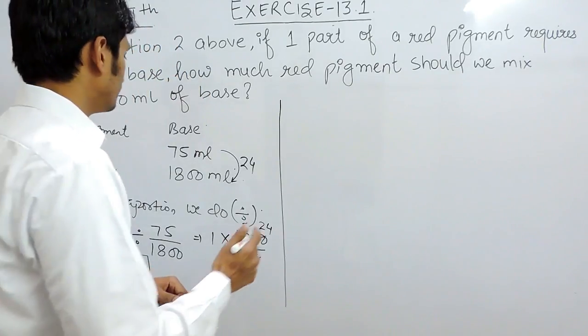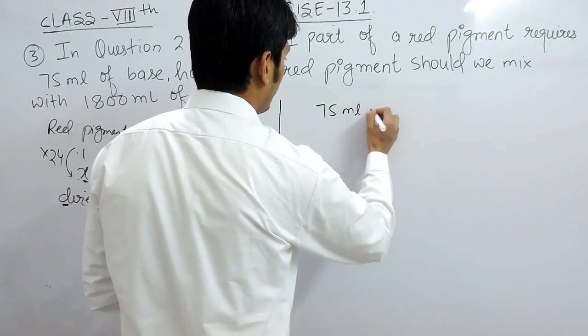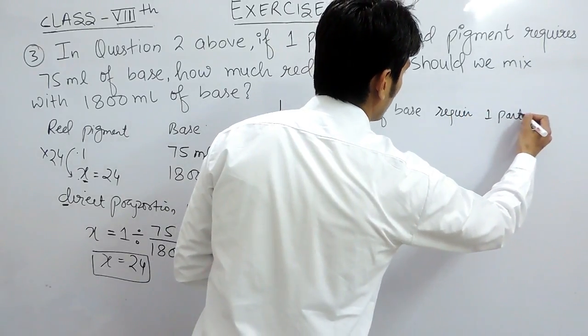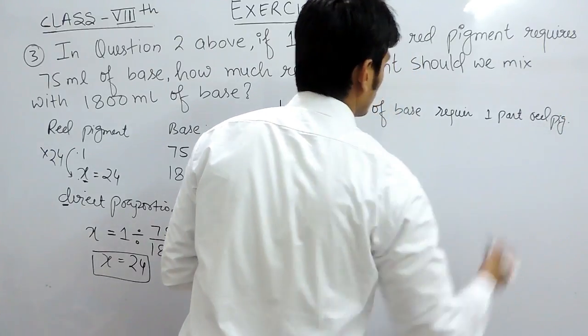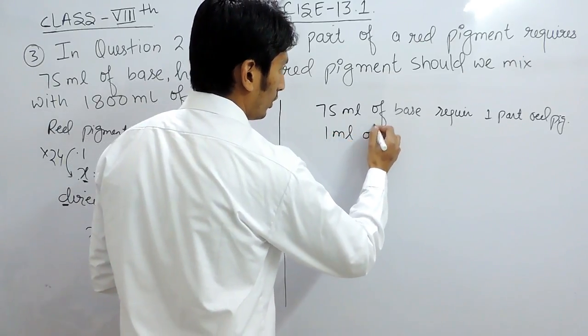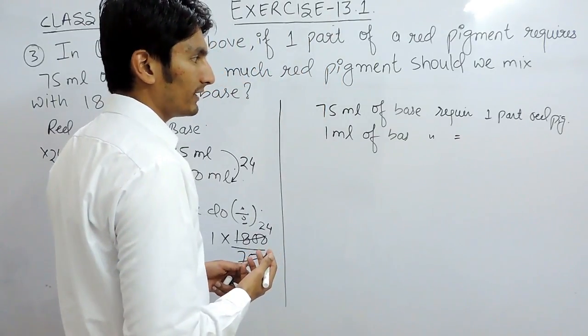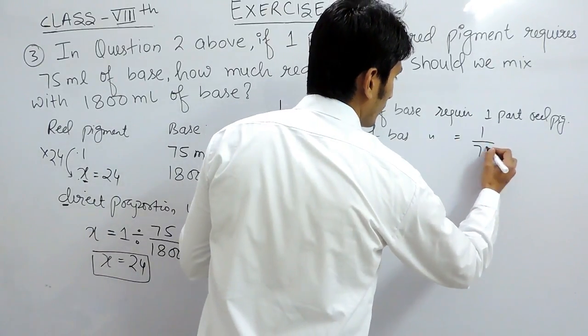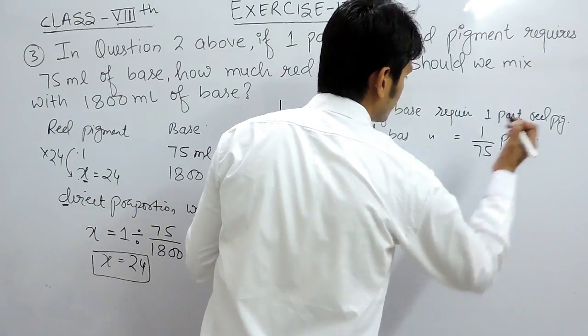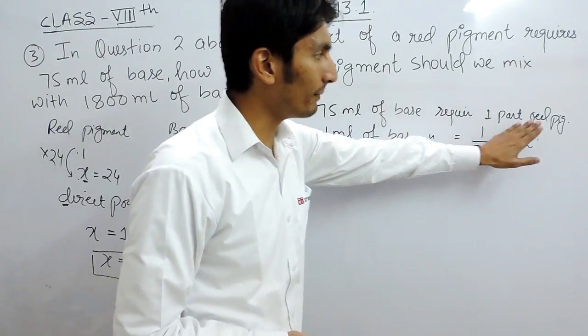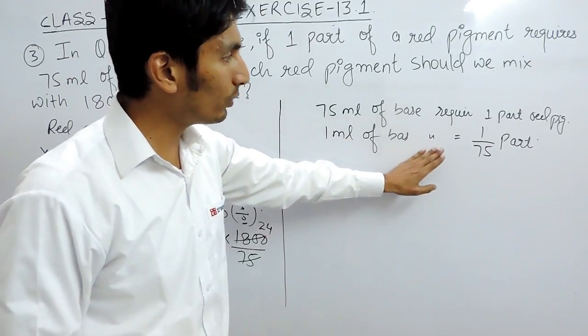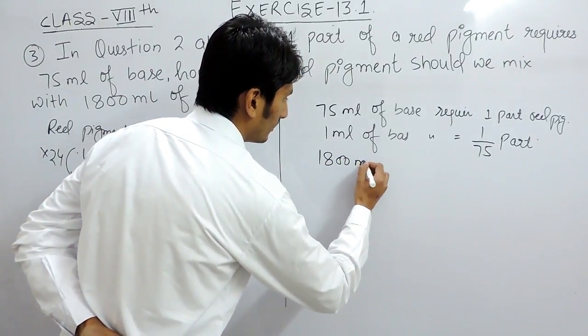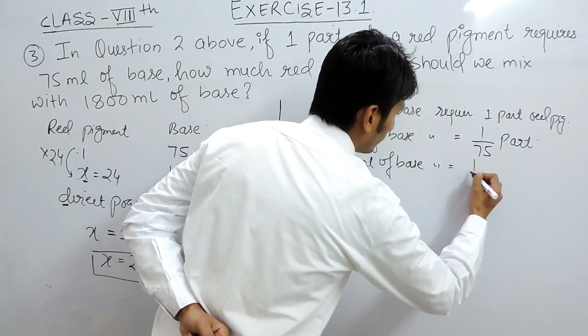There is another way which we learn at school: 75ml of base requires one part of red pigment. So you can find one ml of base will require how many parts of red pigment. Clearly, when this decreases, this must also decrease. So you have to divide this by 75. So 75ml of base requires one part of red pigment, so clearly one ml of base requires one upon 75 parts of red pigment.